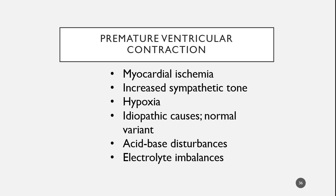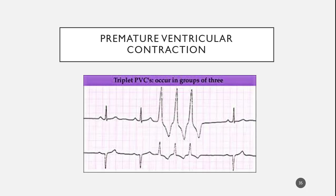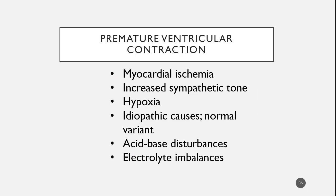Idiopathic causes — idiopathic is a billable medical term that basically means 'I don't know.' It may be normal, it may be pathological, but we've done all our tests and we don't know. Acid-base disturbances — we'll cover a lot about acid-base in advanced cardiology. The body likes to be within a very narrow pH range, and when it gets out of that range, things begin to not work well, and we can begin to see rhythms like this.